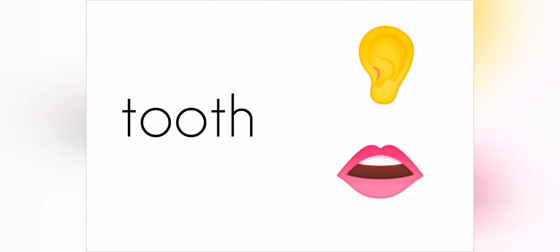Let's have a look at the next word — get those robot arms ready: T, oo, TH — tooth. Which emoji has a tooth? Yes, well done, it's at the bottom. Let's segment and blend this word: B, oo, T — boot. Which emoji is showing a boot? Well done, it's a black boot at the top. I hope you enjoyed the emoji matching to the word today.